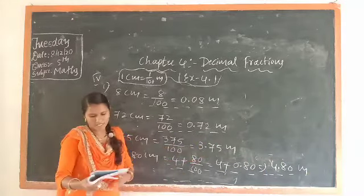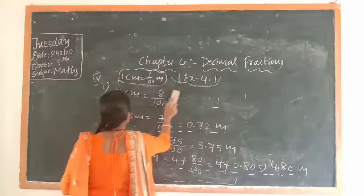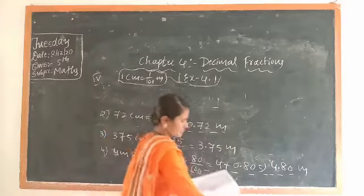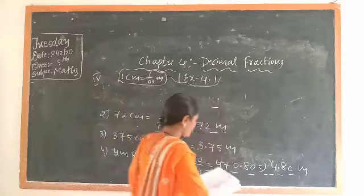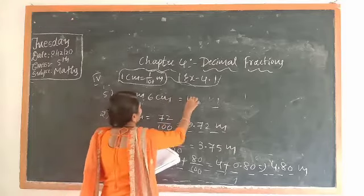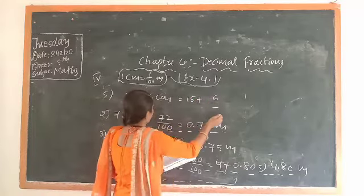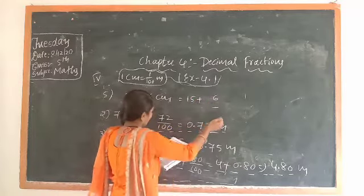In the fifth question: 15 meter and 6 centimeter. The meter stays as is; only convert the centimeter: 6/100. Here, two digits after the point gives 0.06. Adding, you get 15 + 0.06 = 15.06 meter.